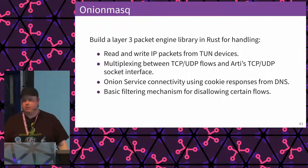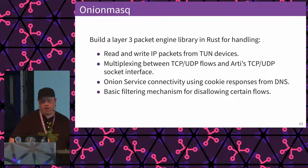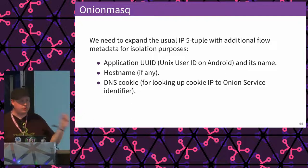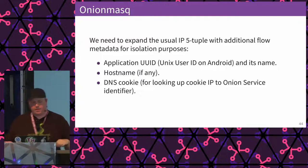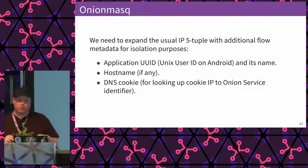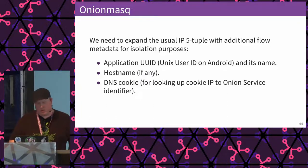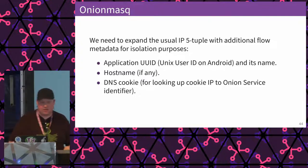We also need basic filtering — blocking certain application endpoints or sources. Usually you look at the five-tuple: source address, source port, target port, target address, and protocol. We need to populate more metadata to do isolation primitives properly — just as Tor Browser isolates tabs and website origins. On modern Android, we've identified we can get the application UUID, a hostname that is the target, and the DNS cookie available there.